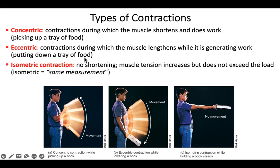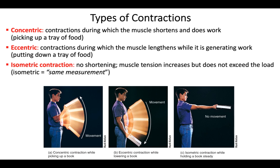If you're just holding the book steady, the biceps is in a contracted state but neither lengthening nor shortening — the length stays the same. Isometric means same length. In isometric contraction there's muscle tension but no change in length. This all relates to load: muscle force greater than the weight moves it up (concentric), weight greater than force moves it down (eccentric), and equal forces mean no movement (isometric).